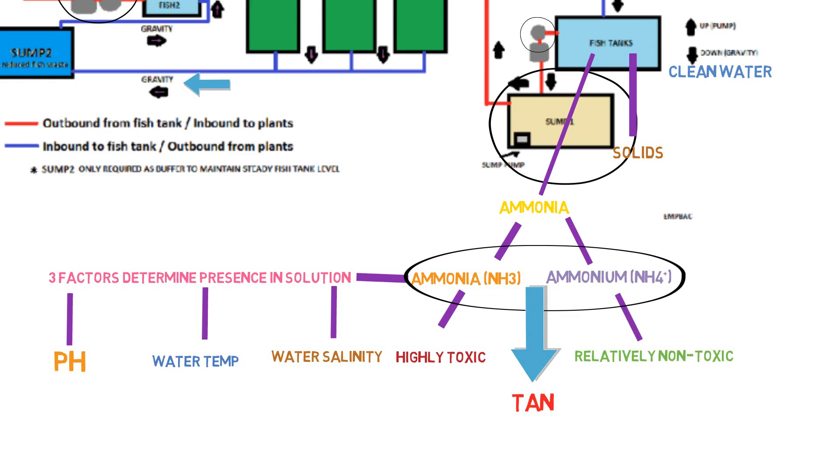Now, like I said, there's those three factors, the pH, the water temperature and water salinity are going to dictate how much of that total ammonia is free unionized ammonia. So with that being said, this leads us to the kicker. Here's the kicker. This is what I need you to listen up to right here. The plants that you're expecting to filter out the water as it passes through the grow bed, they don't take up ammonia. The roots don't take up ammonia.